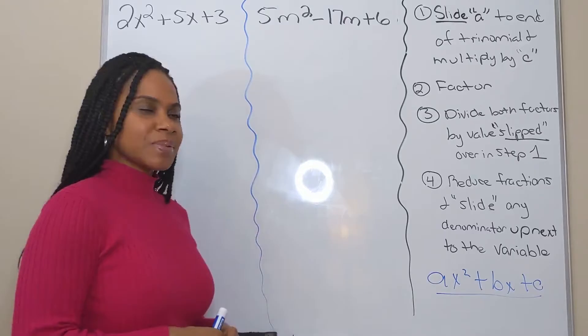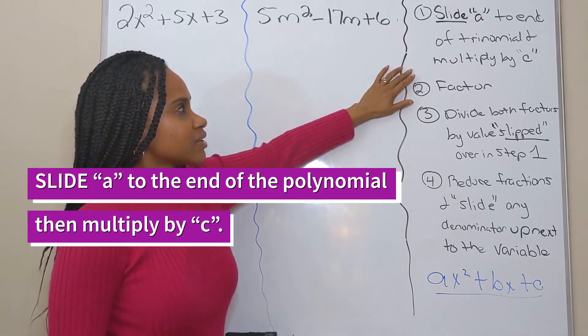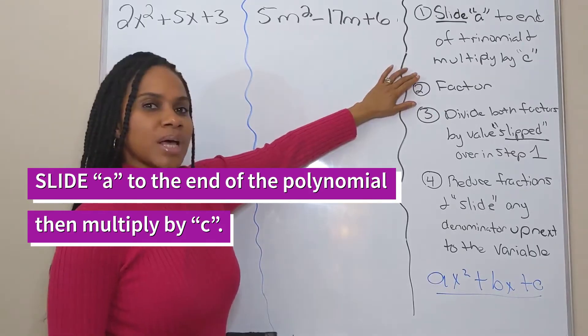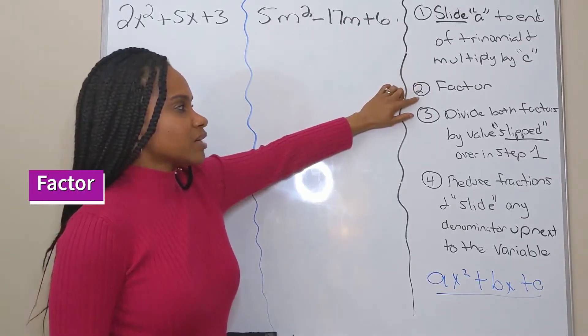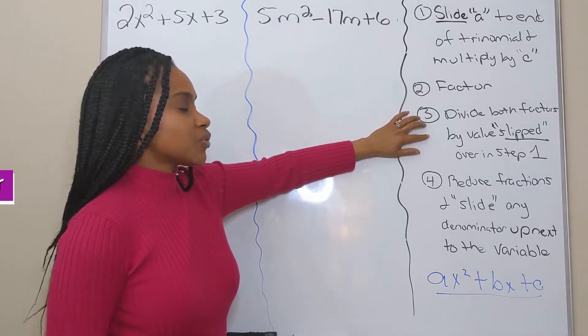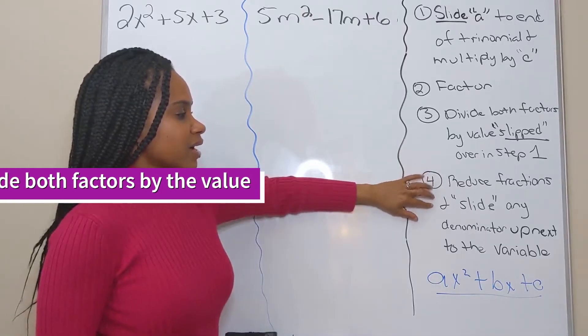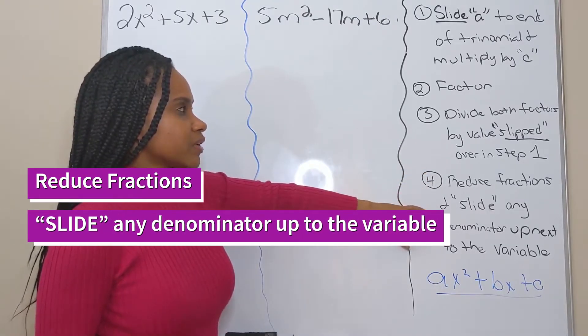All right, so the slip and slide method, I have the steps here. Step one, we want to slide a to the end of the trinomial and multiply by c. You want to factor, divide both factors by the values that we slip over in step one, and then reduce the fractions and slide any denominator up to the variable.